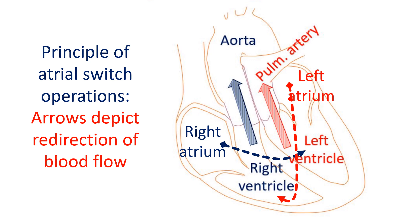These were called atrial switch operations. The first one, known as the Senning operation using atrial flaps, was described in 1957. The second one was the Mustard operation, using pericardium, described in 1963.